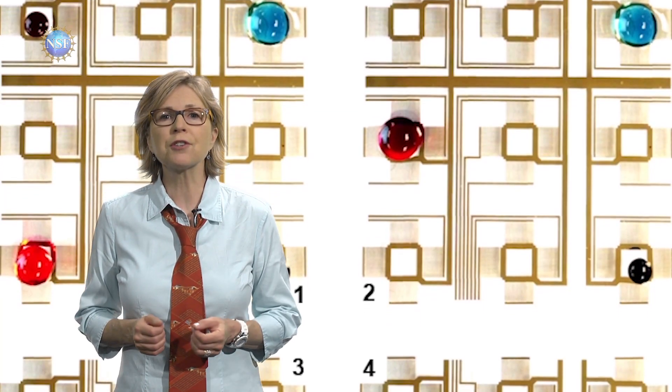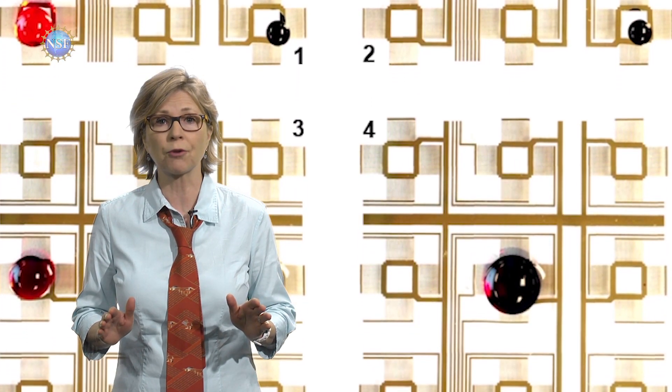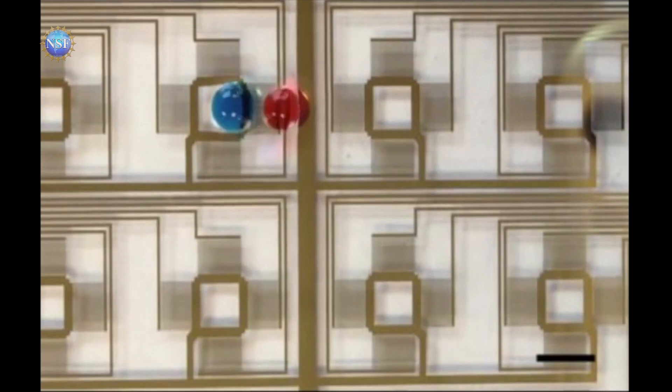This invention could improve lab on a chip. Engineers have developed a way to manipulate tiny droplets of blood and other biological fluids by having them surf on acoustic waves in oil. They can move them, split them, mix them, all without leaving a trace, overcoming a major drawback in current models that rely on solid surfaces.